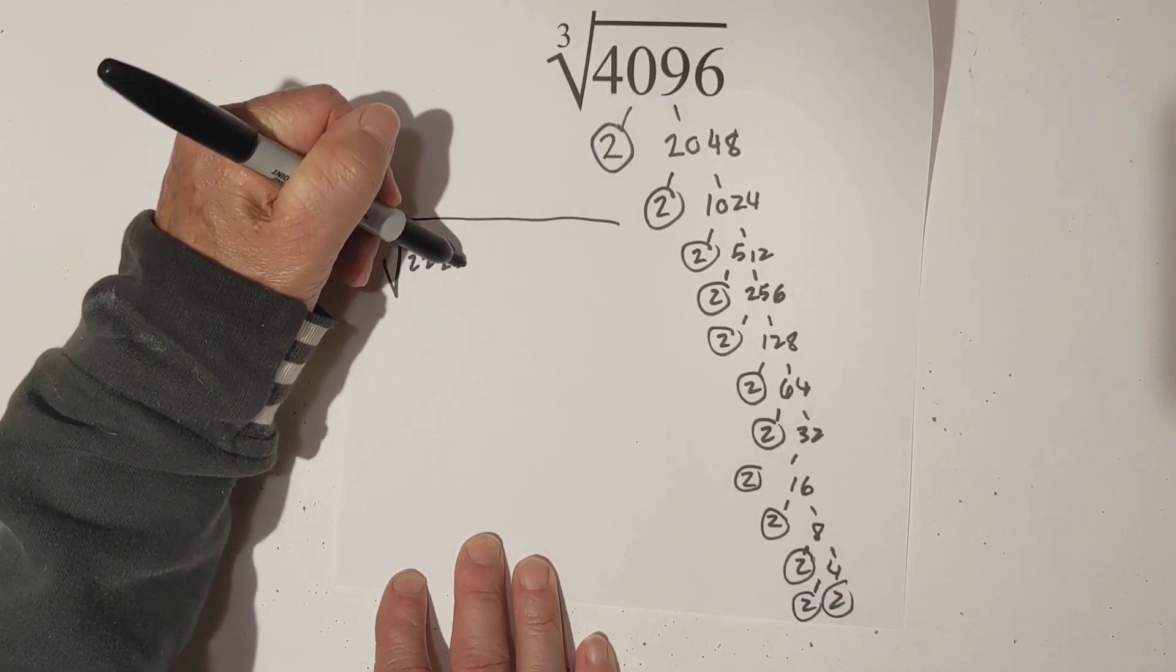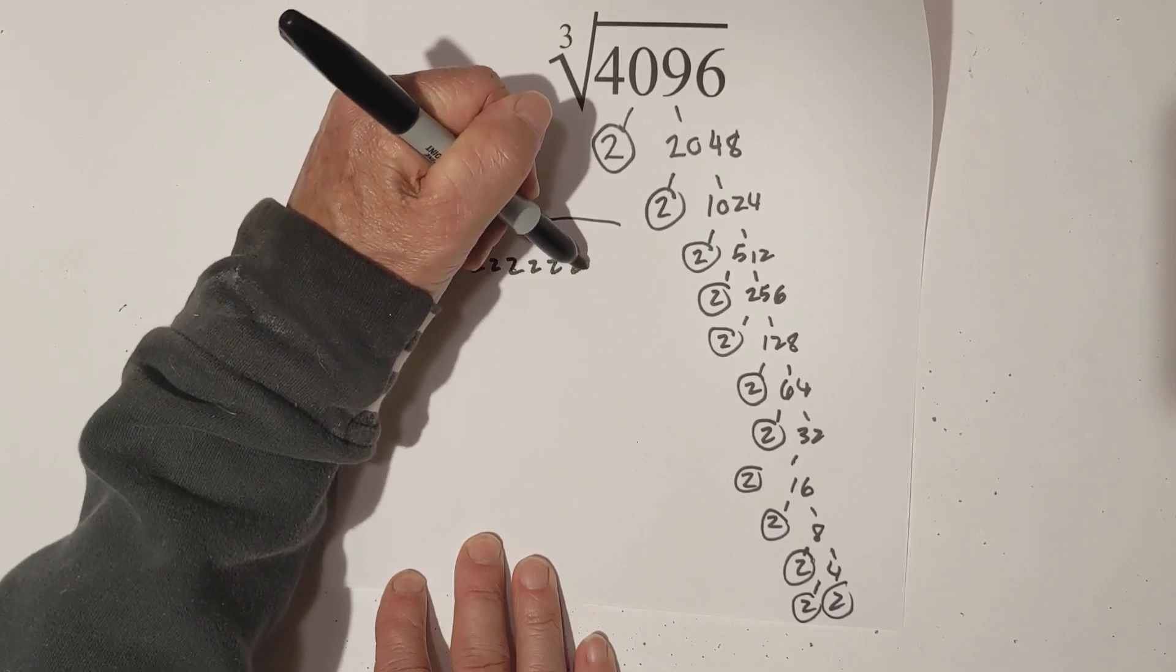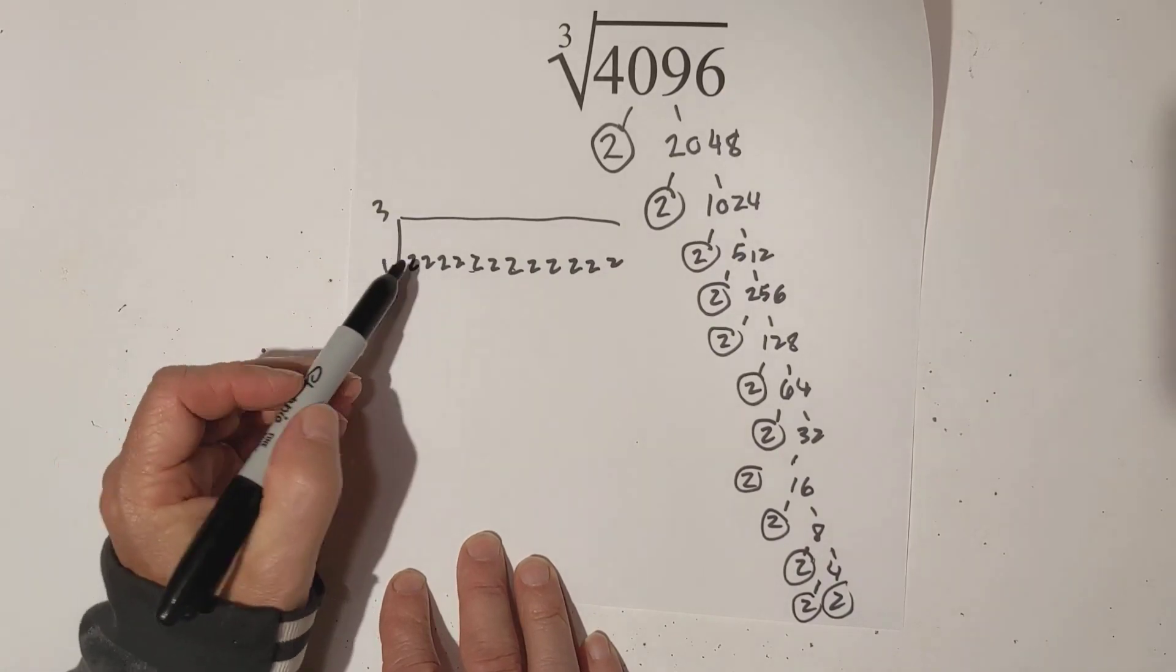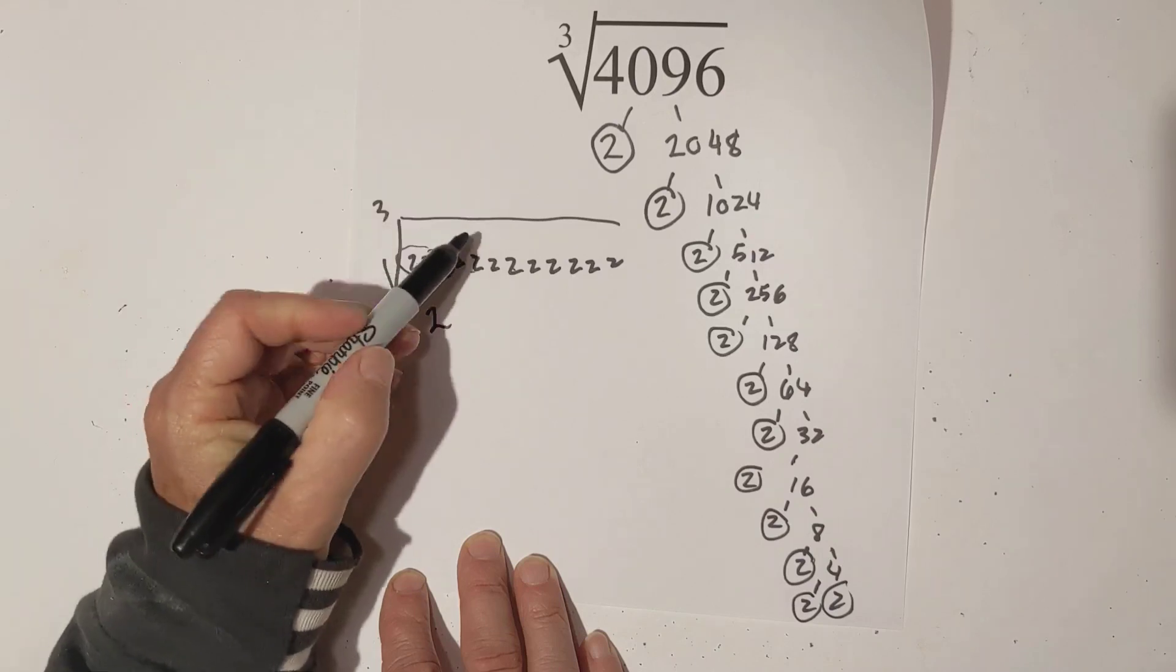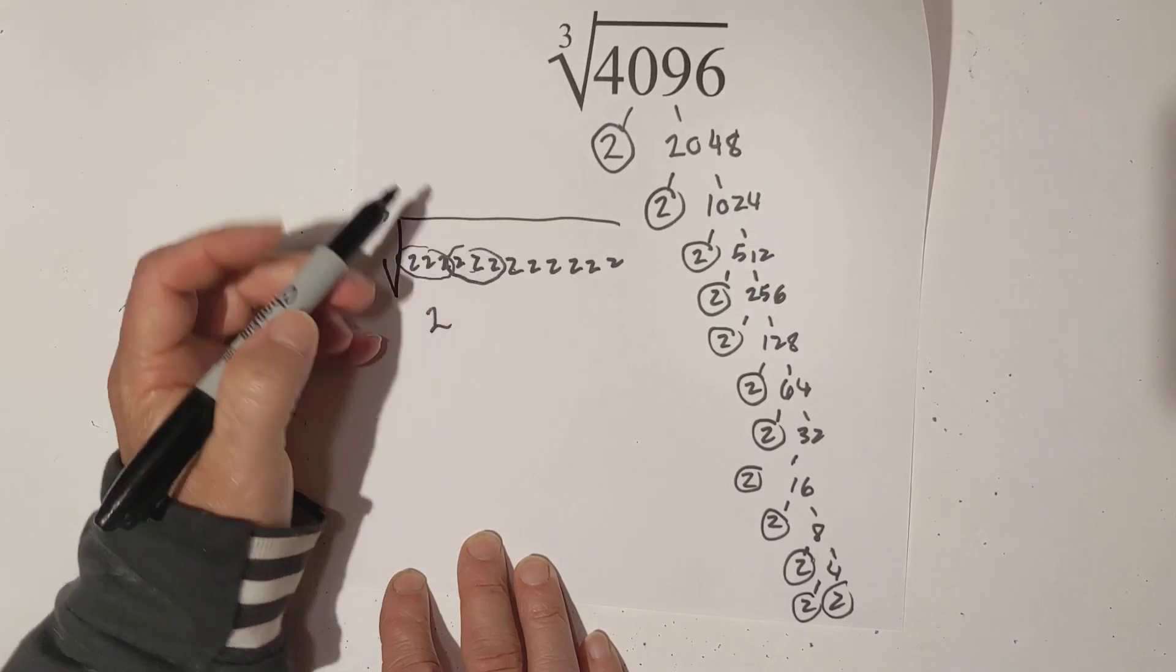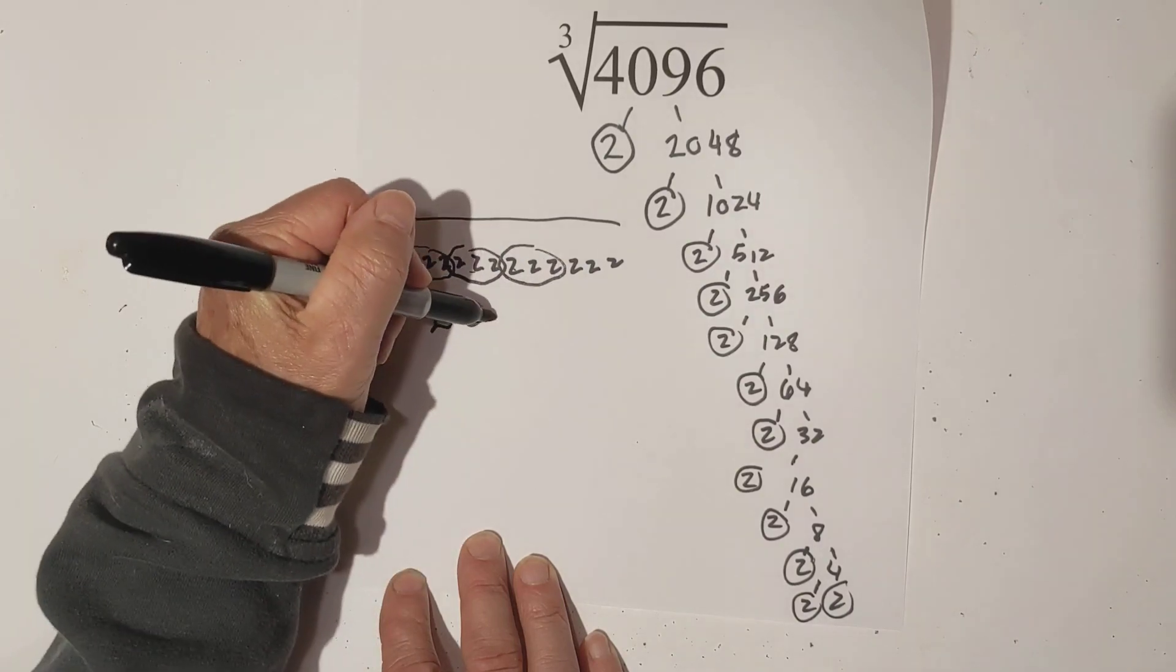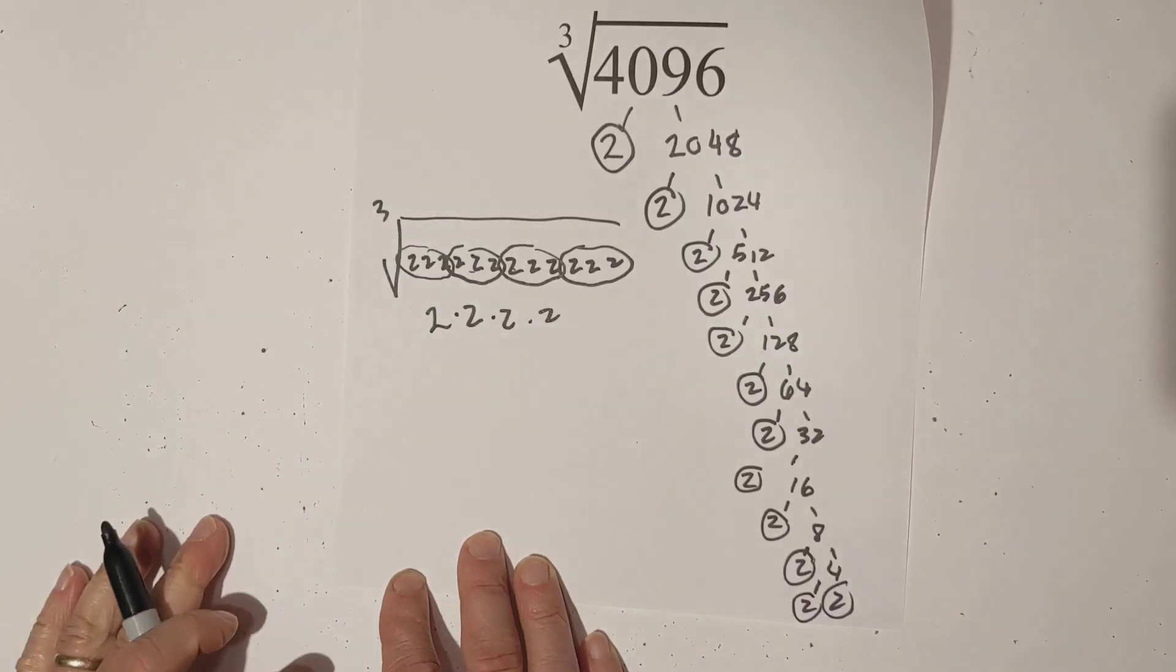1, 2, 3, 4, 5, 6, 7, 8, 9, 10, 11, 12. Remember, you can pull out groups of 3. So here's 1, here's 2, here's 3, and here's a fourth group of 3.